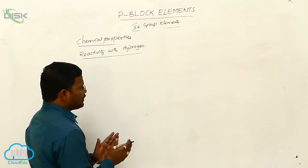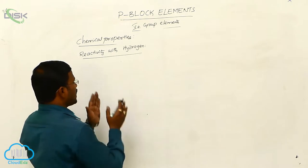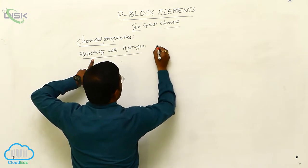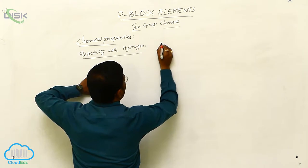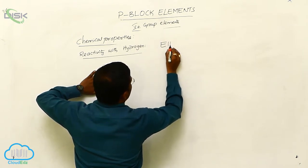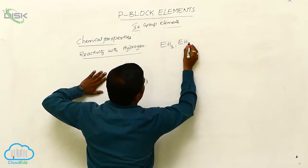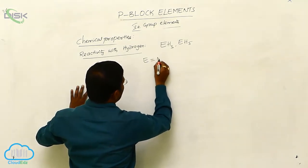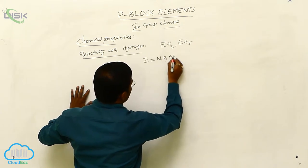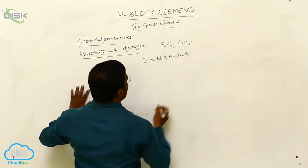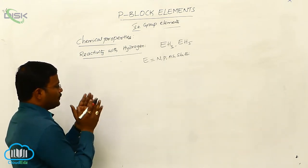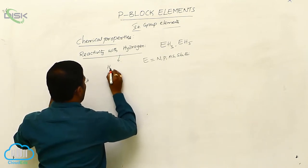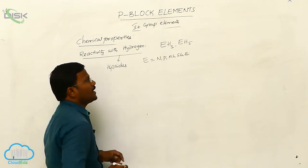Generally, nitrogen, phosphorus, arsenic, antimony, and bismuth, which belong to Group 5A, these elements react with hydrogen and produce two different hydrides: EH3 and EH5 type of hydrides resulting from Group 5A elements, where E equals a Group 5A element like nitrogen, phosphorus, arsenic, antimony, and bismuth.